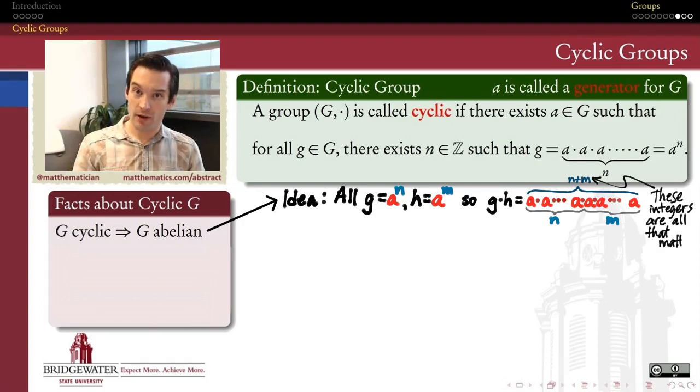Remember how I said we see shades of the additive group of integers everywhere when dealing with cyclic groups. When I multiply two elements together, their exponents just add together. This is another reflection that the integers in the exponents are really what's driving the structure in a cyclic group.